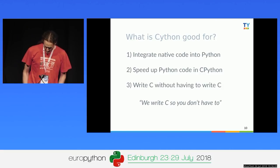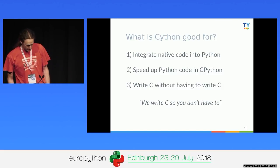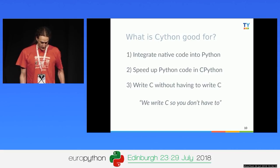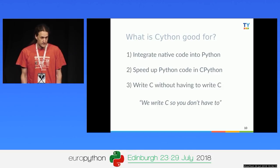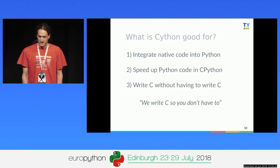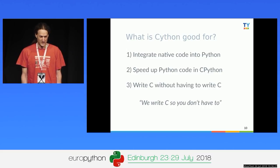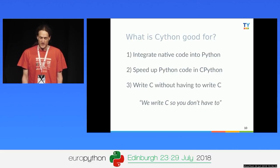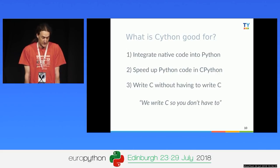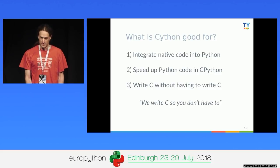So what is Cython good for? It integrates native code into Python. Many people use it to speed up Python code by compiling it into native code. And surprisingly, many people use it to write C code without having to write C code — because writing C is hard, writing Python is much more fun. Cython lets you write Python code that translates to C. We write the C code so you don't have to.